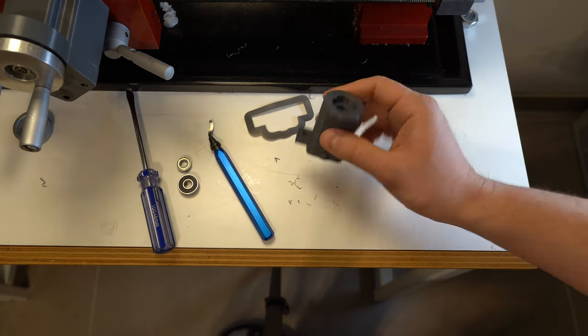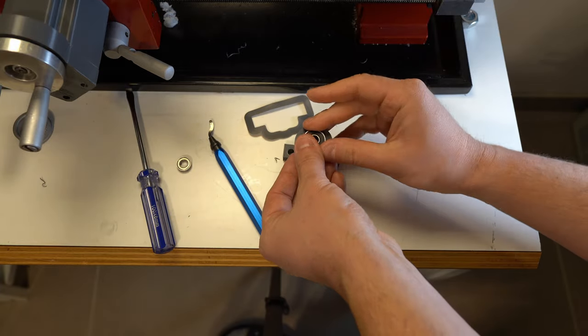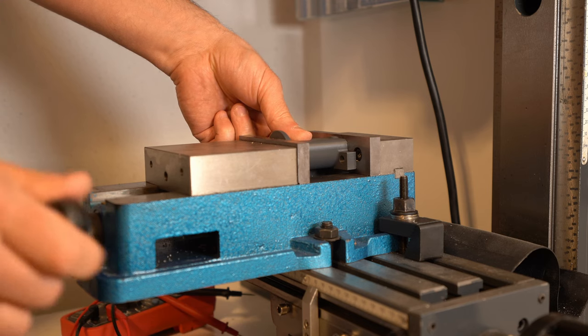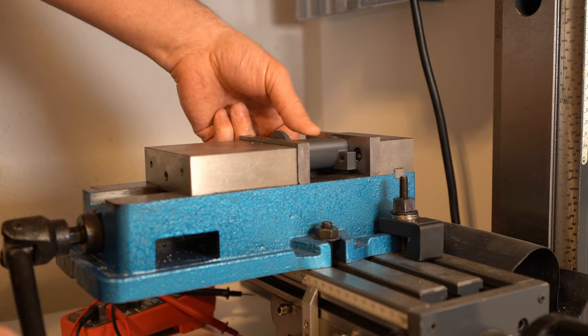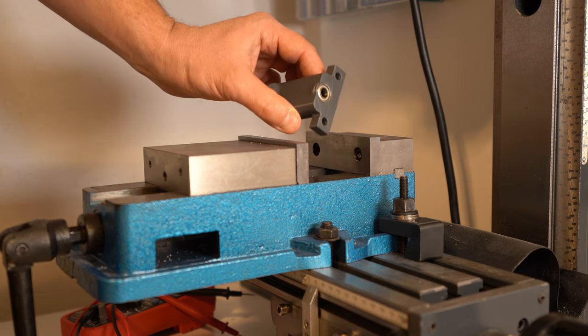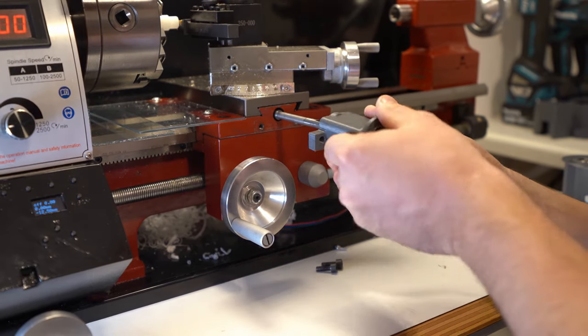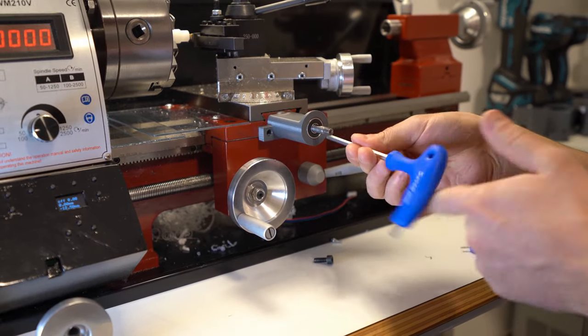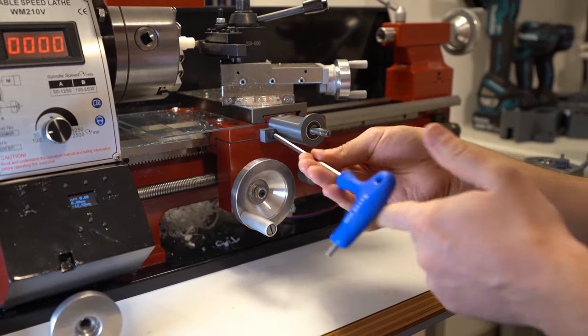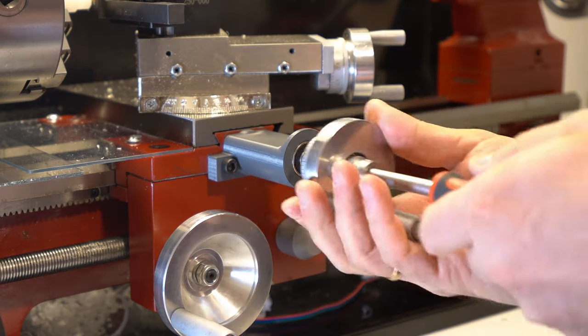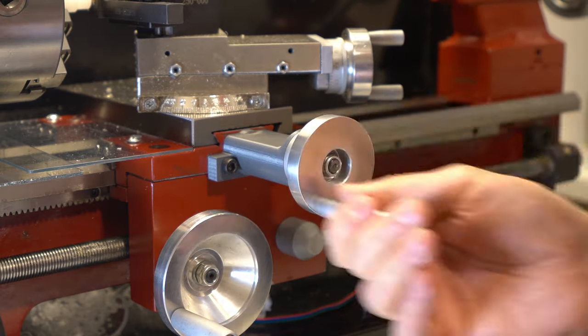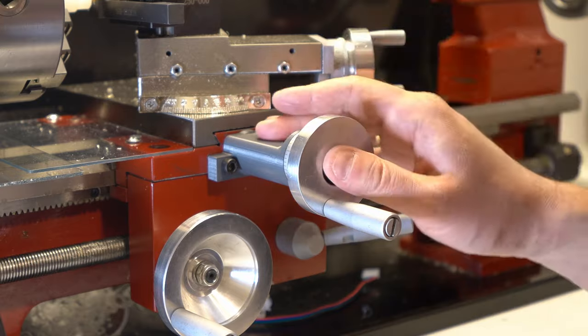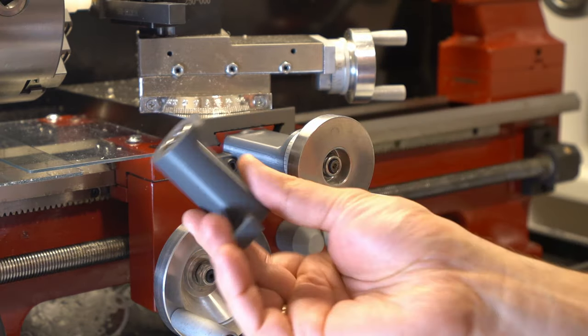Now the question is, how do we put the bearings in? Of course, it's possible just to hammer it in with a soft hammer or with woodworking clamps. Now we have our part and it's working great, just like the other one.